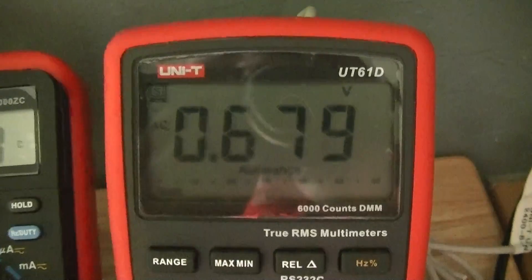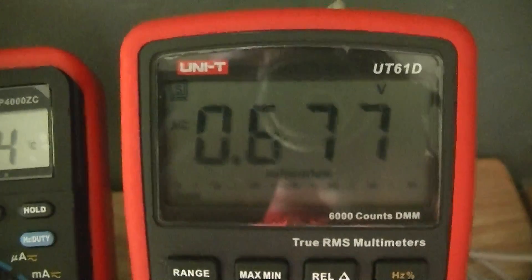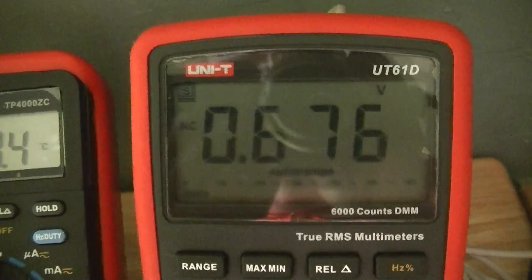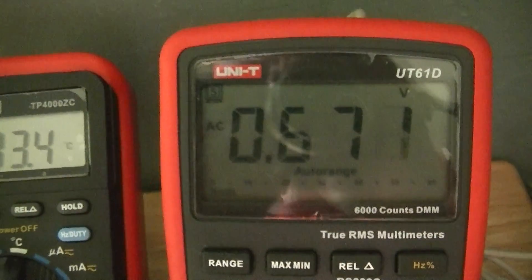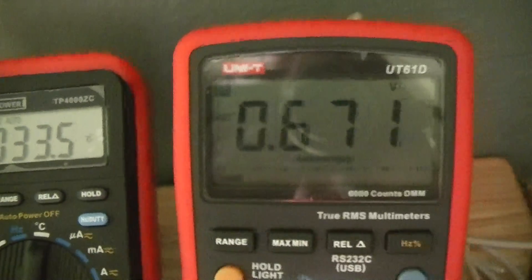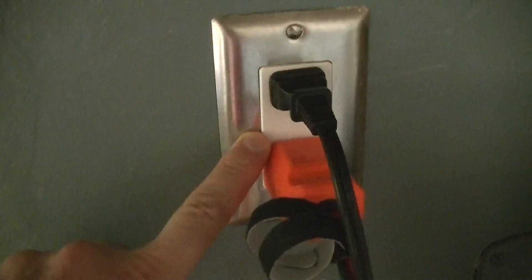And this is the Uni-T UT61D, and this one is a true RMS multimeter that is actually measuring the voltage on the electrical grounding system of the home sockets.